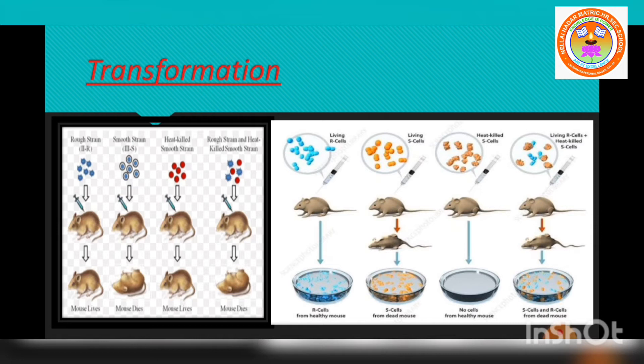When S-type cells were injected into the mouse, the mouse died. When R-type cells were injected, the mouse survived, because R-type cells are avirulent and harmless and cannot cause any disease.